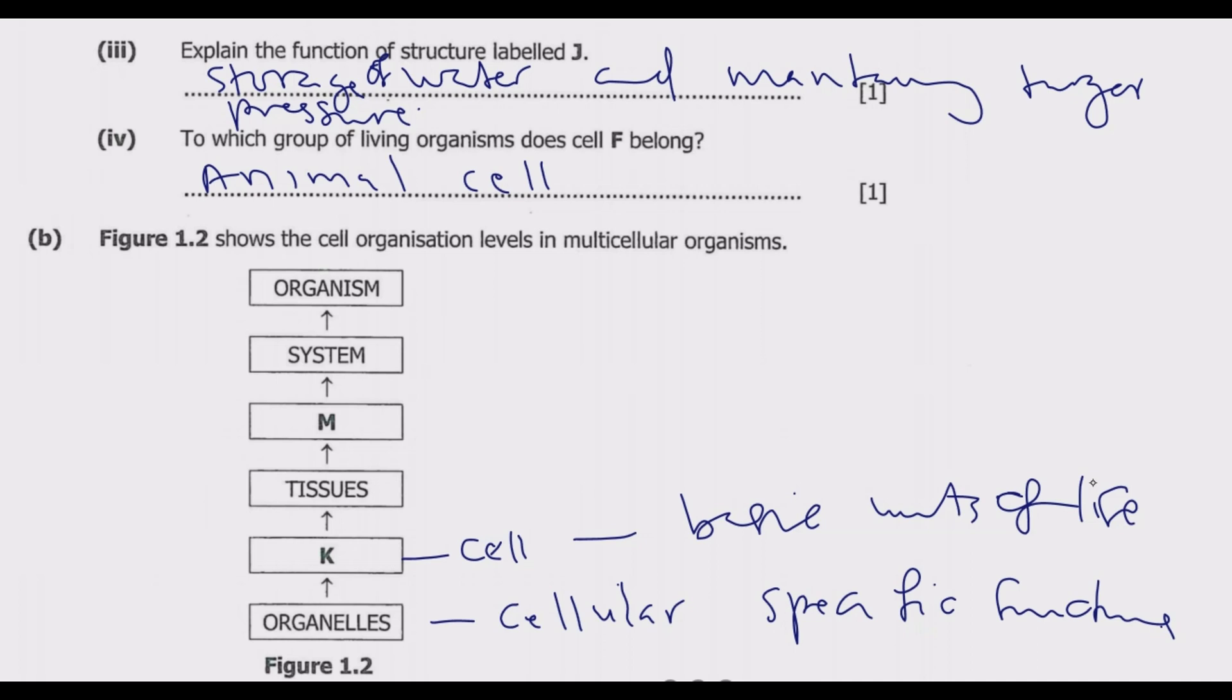A system is a group of interacting or interrelated elements that act according to a set of laws to form a unified whole. Between tissues and system, we have the organ. An organ is a self-contained group of tissues that perform a specific function in the body, that could be the plant or animal. Then of course the system, then we have an organism.